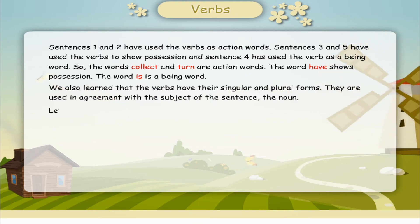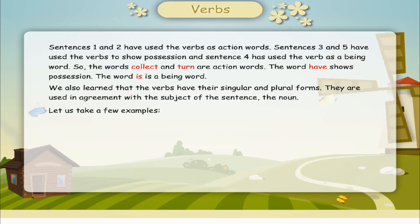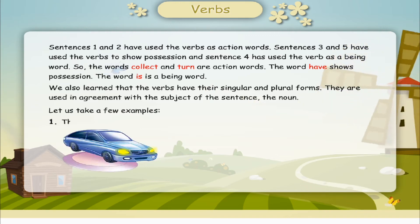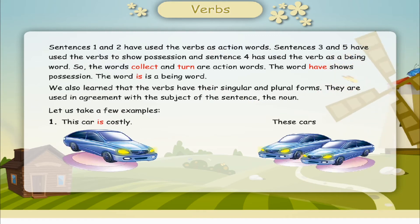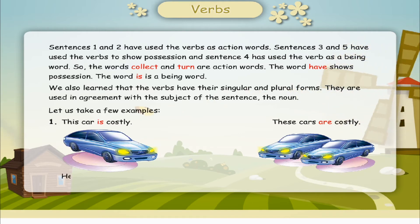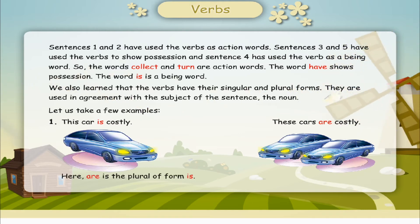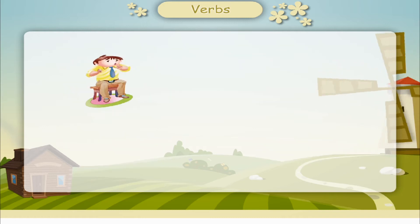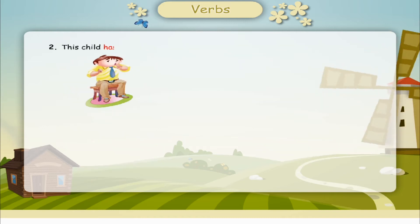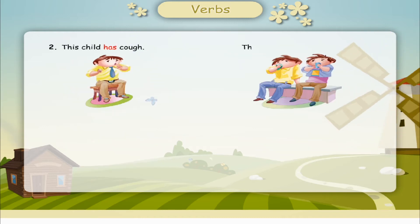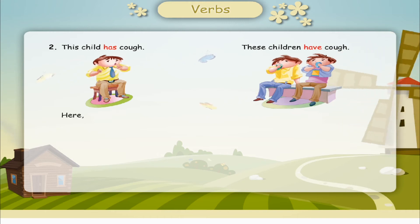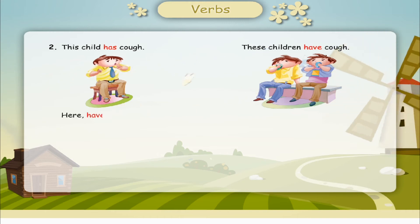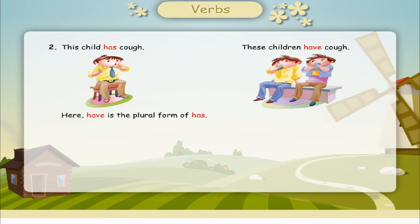Let us take a few examples. This car is costly. These cars are costly. Here, are is the plural form of is. This child has cough. These children have cough. Here, have is the plural form of has.